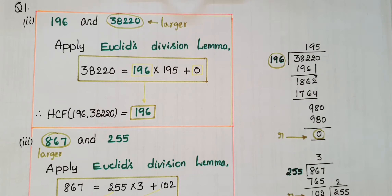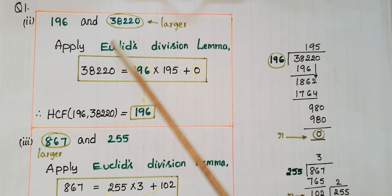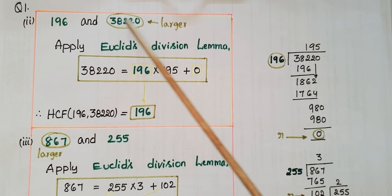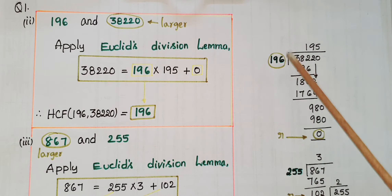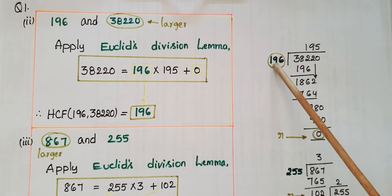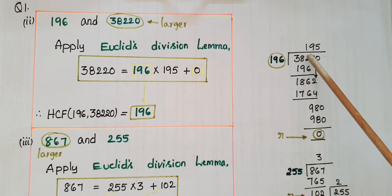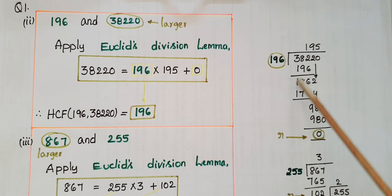The second problem is 196 and 38220. Apply Euclid's division lemma on these two numbers. The larger number is 38220, so divide 38220 by 196. 196 once is 196, then subtract 196 from 382.